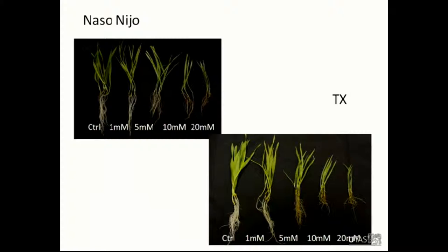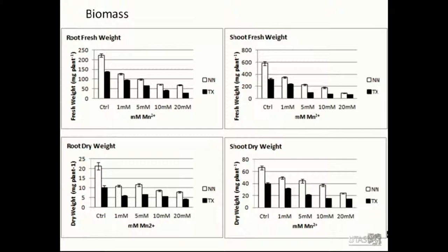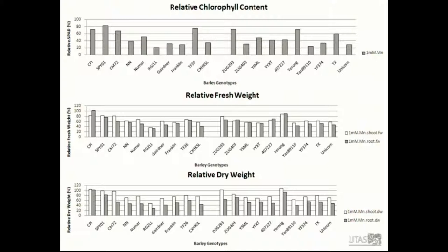These are two pictures from developing the screening method, and it is clear that the two varieties suffer differently from manganese toxicity at various concentrations. At increasing concentrations of manganese in nutrient solution, biomass decreased in both Nasonidro and TX; both fresh weight and dry weight were more severely reduced at high manganese concentration compared with low manganese concentration in both varieties. However, there was no significant difference between these two varieties. Based on relative biomass and chlorophyll content figures, wild barley types such as CPI and SPI-01 performed well in tolerance to manganese toxicity.